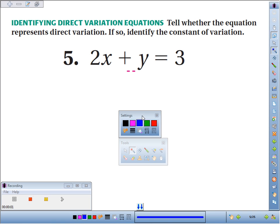Number 5, we're supposed to tell whether the equation represents direct variation, and if so, identify the constant of variation.